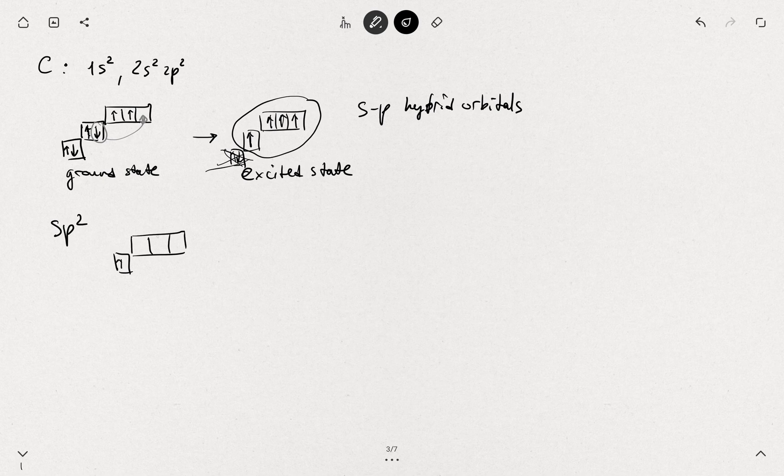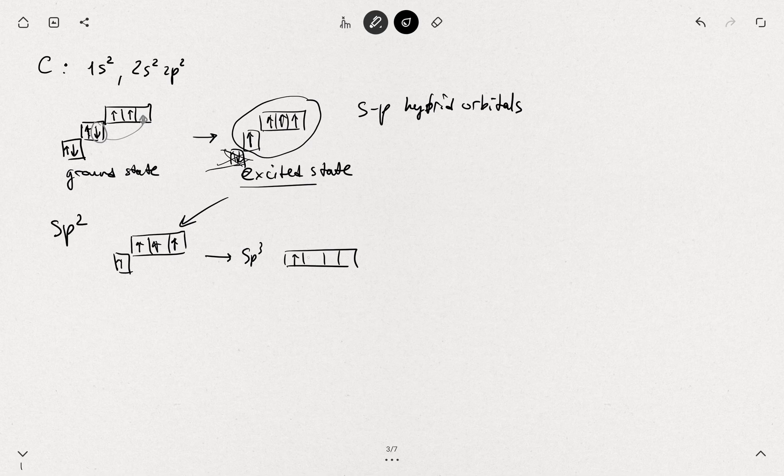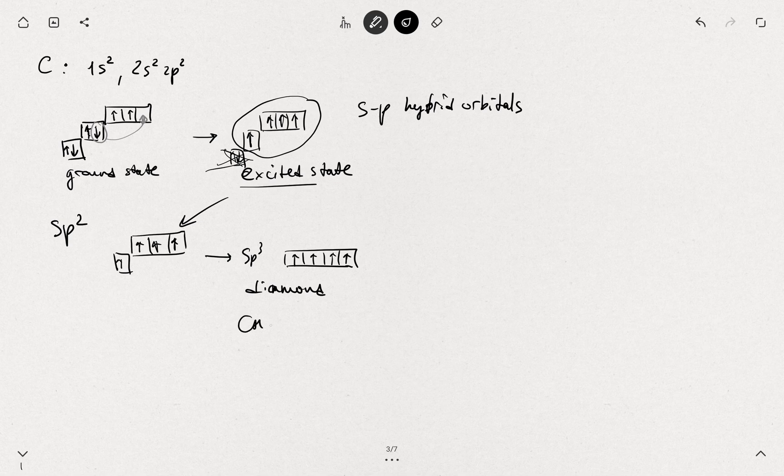This is our excited state. When it forms sp3 hybrids they all are now on the same energy. So those are all sp3 hybridized electrons. This is normally happening in diamond, in methane, in the chemistry, chemical molecules like methane.